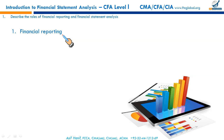Users of financial statements include regulators, internal users, external users, those with direct interest in the firm, and those with indirect interest like analysts. Analysts and regulators have indirect interest. Financial reporting is all about the preparation of financial statements: balance sheet, income statement, statement of changes in equity, and cash flow statement. Each of these statements is covered in a separate reading, and we will drill down into deeper details.